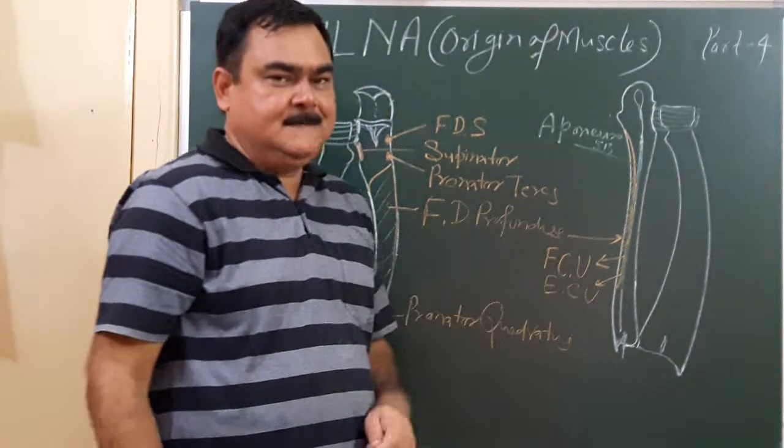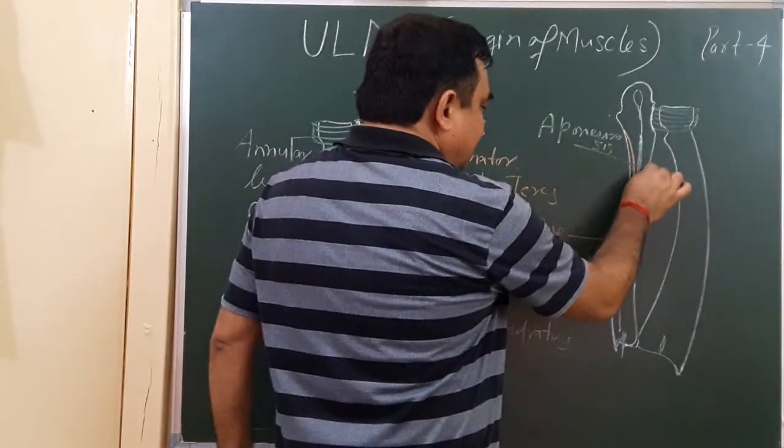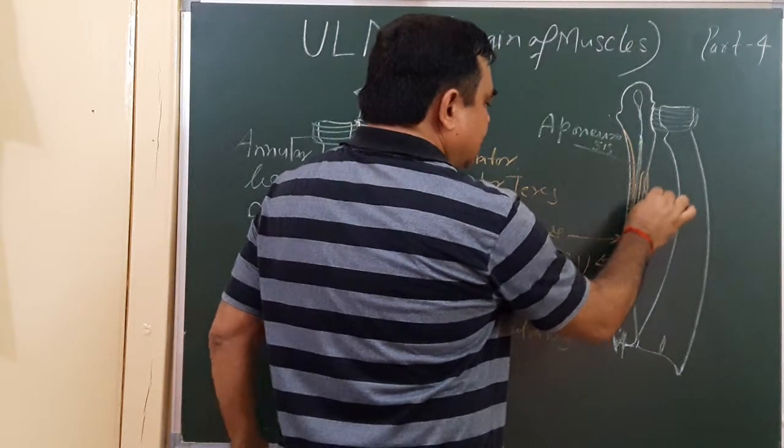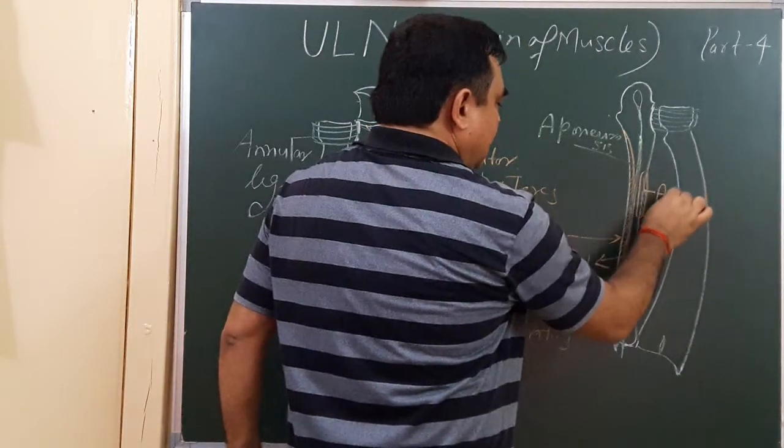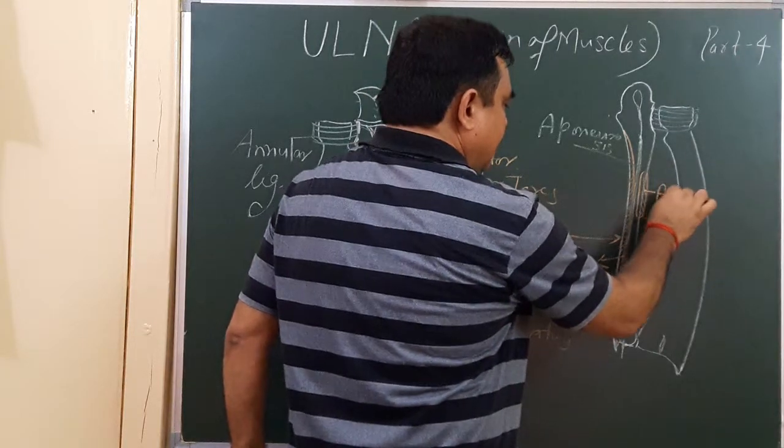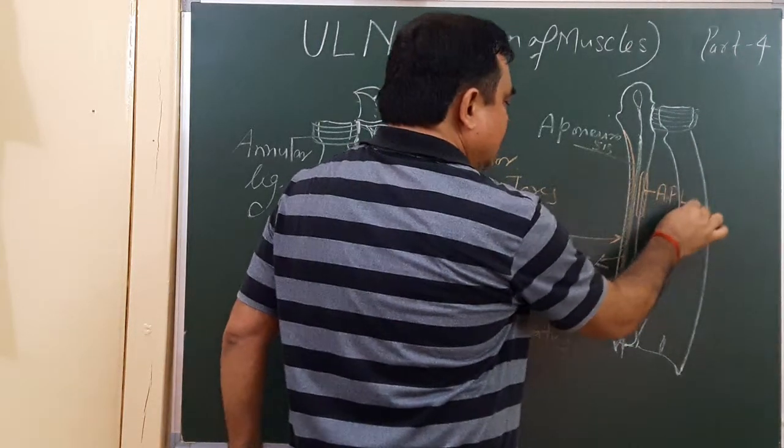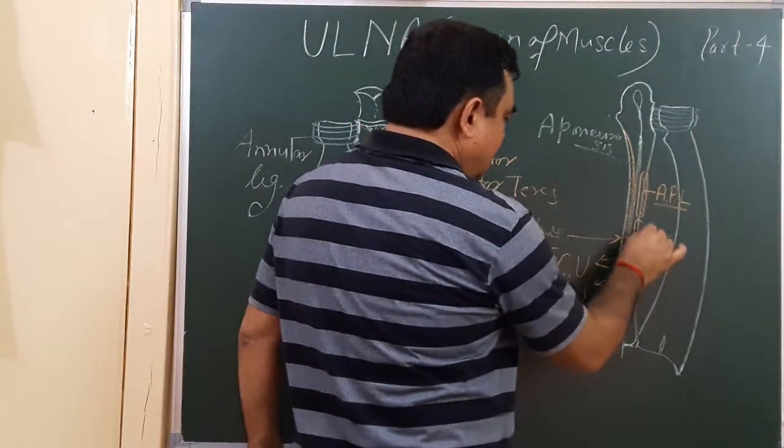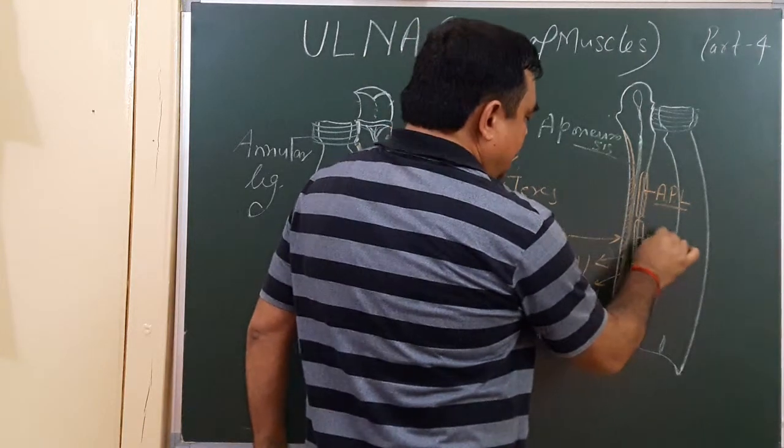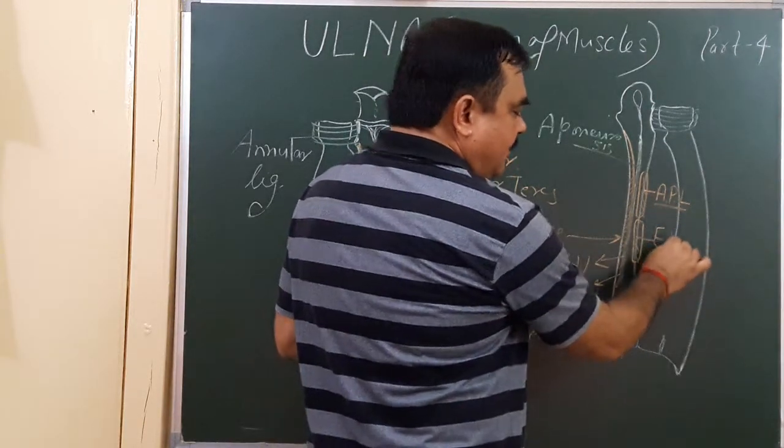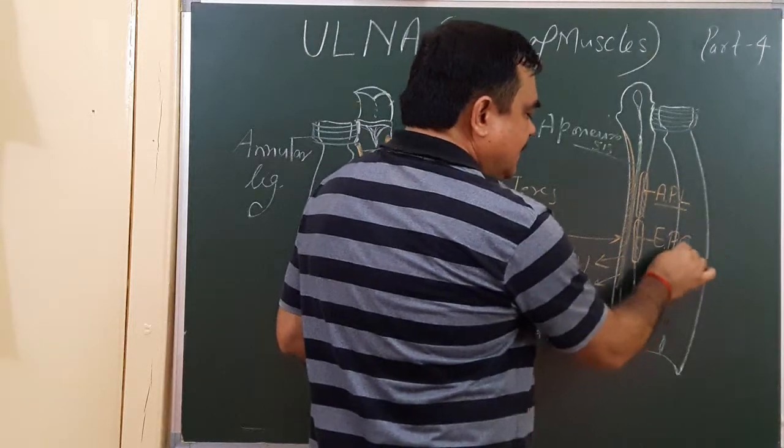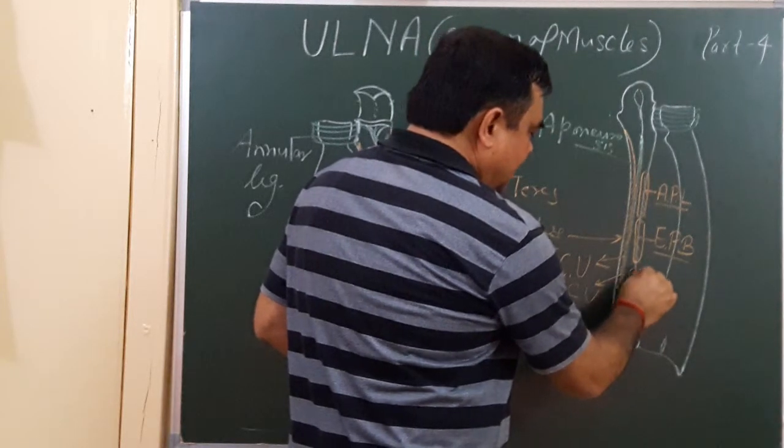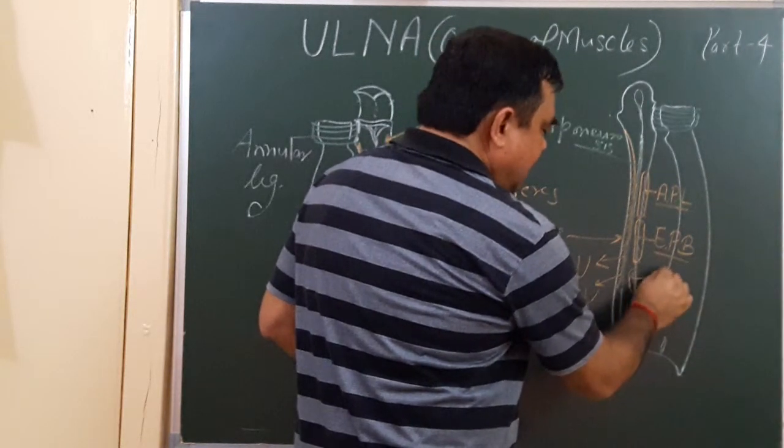Another muscle arises from this part. This is abductor pollicis longus. Here is extensor pollicis brevis, and extensor indicis.